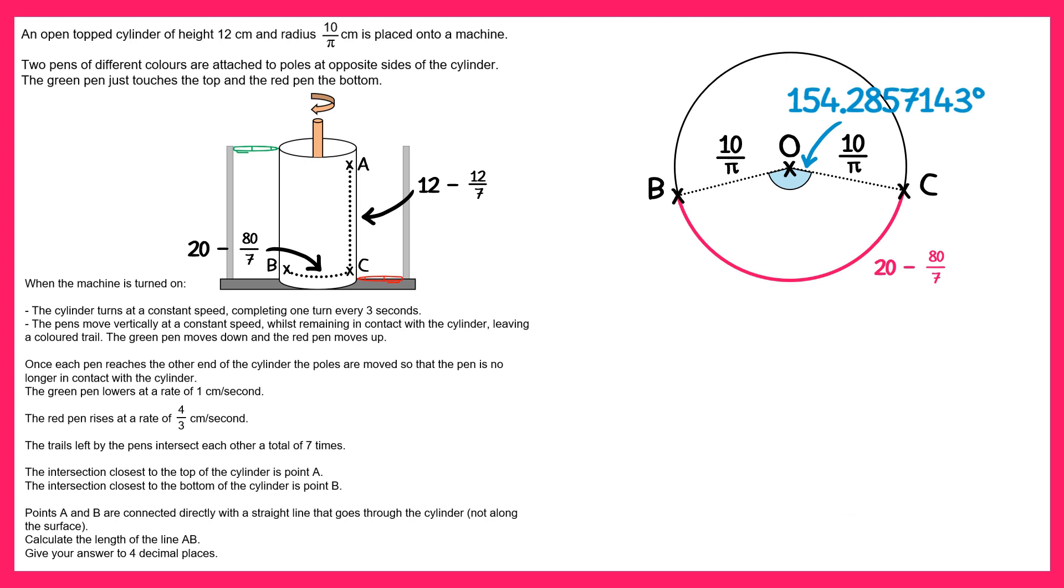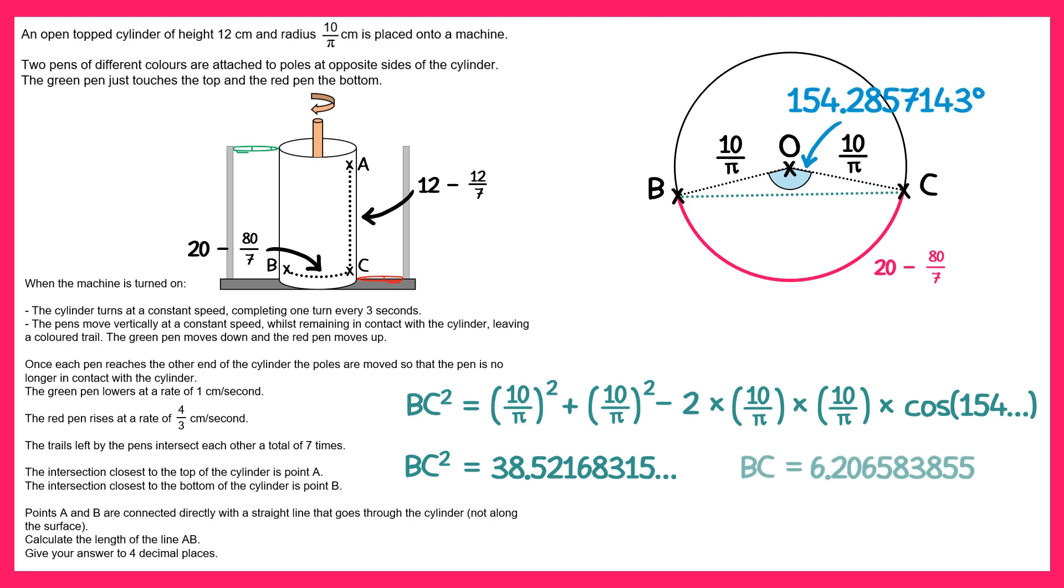Now let's draw on a straight line connecting B and C. We can find this length using the cosine rule on the triangle BOC. So BC squared would equal BO squared plus OC squared which is just 10 over pi squared plus 10 over pi squared minus 2 lots of 10 over pi times 10 over pi and then times cos of the angle which we know is cos of 154.28 and so on. If you work out the right hand side on your calculator you get this number here. And then square root both sides will give you a BC value of 6.206 and so on. Let's also add this length to our diagram.